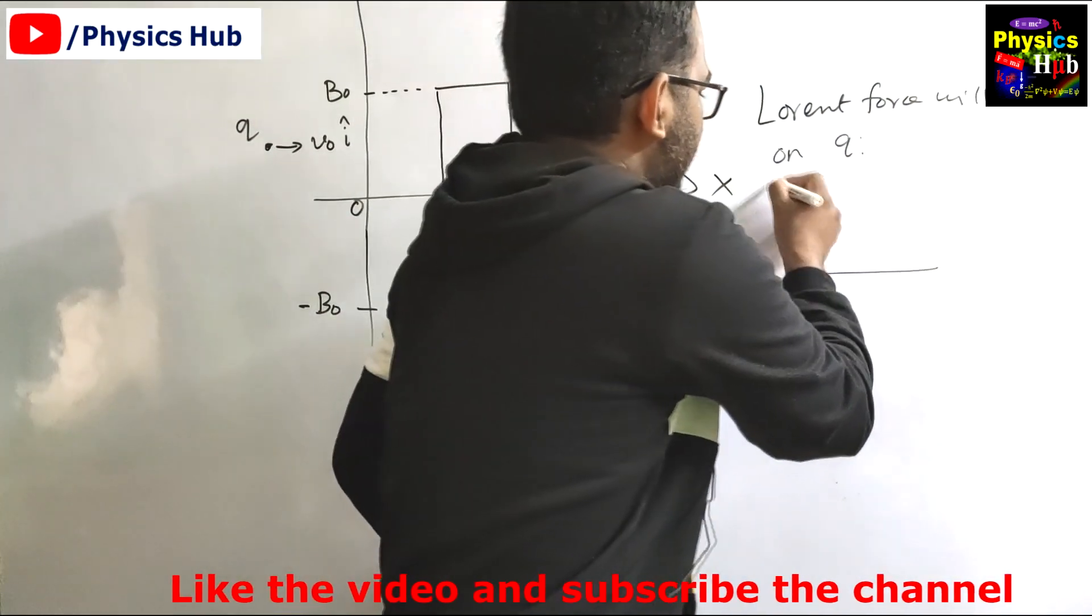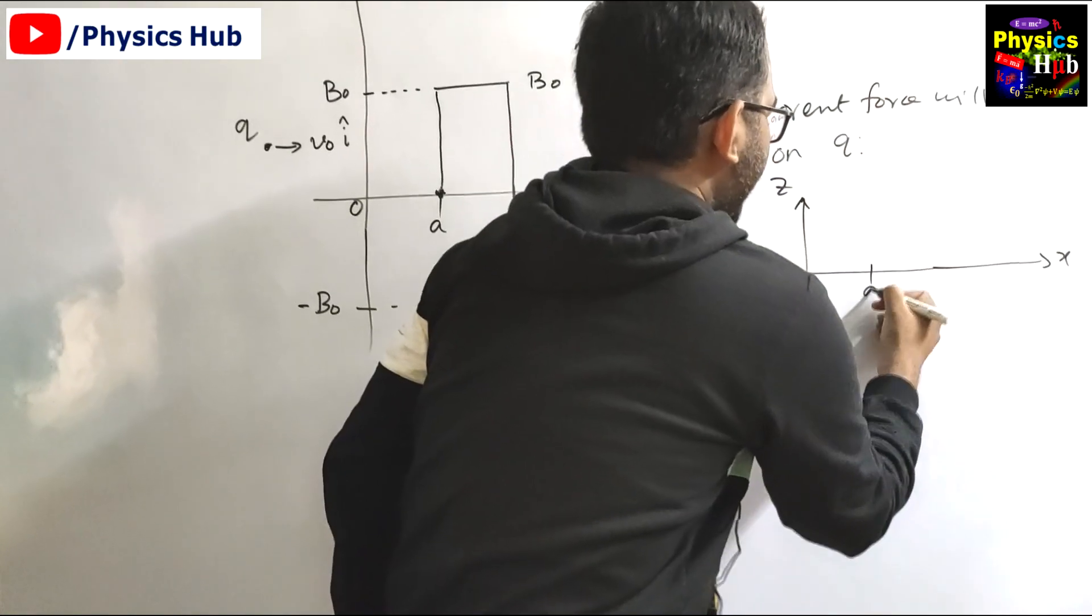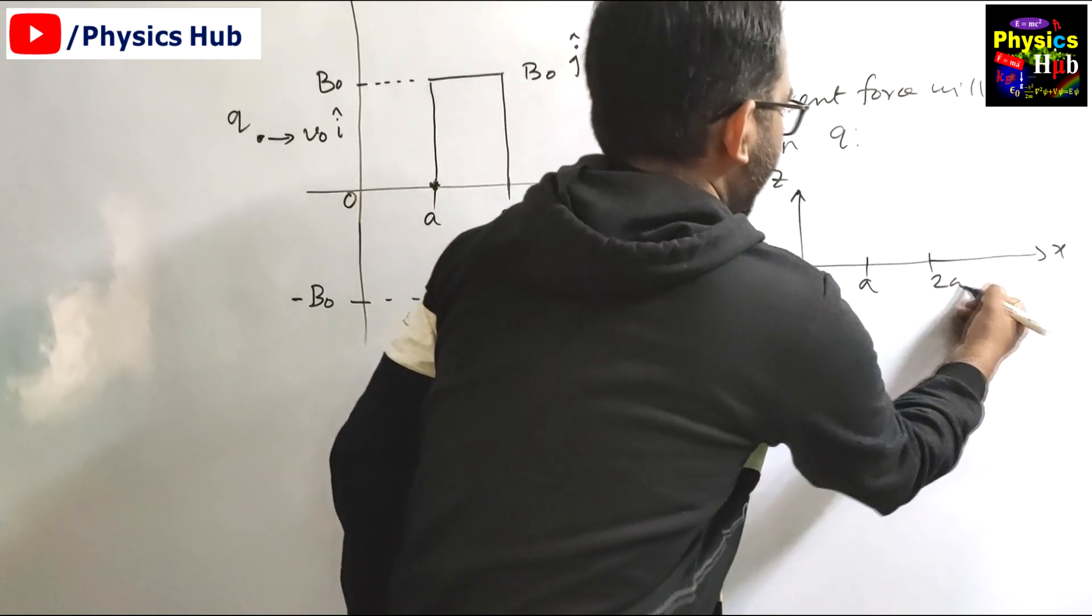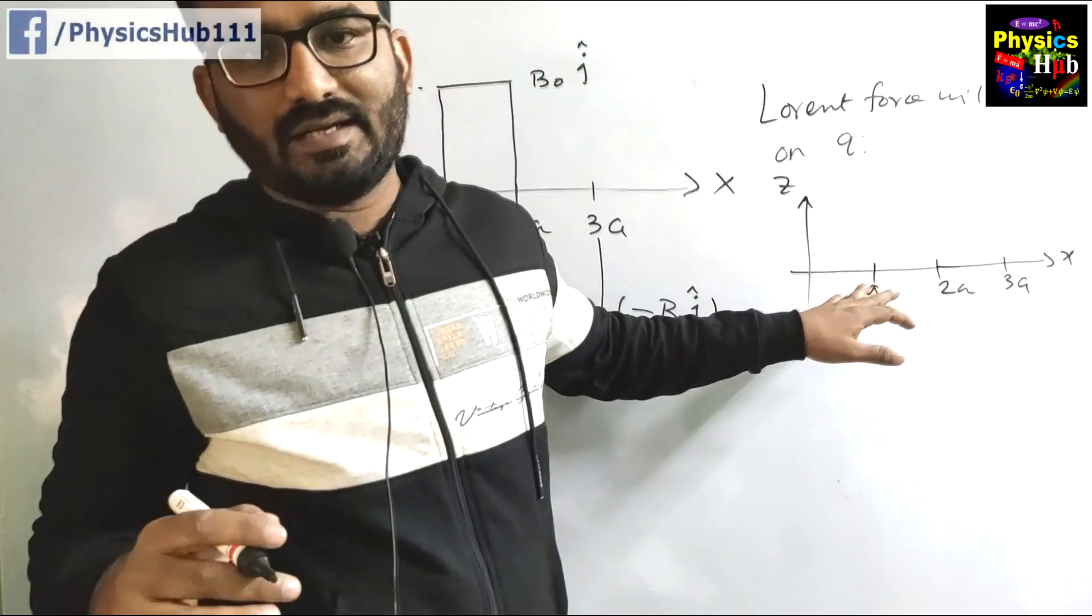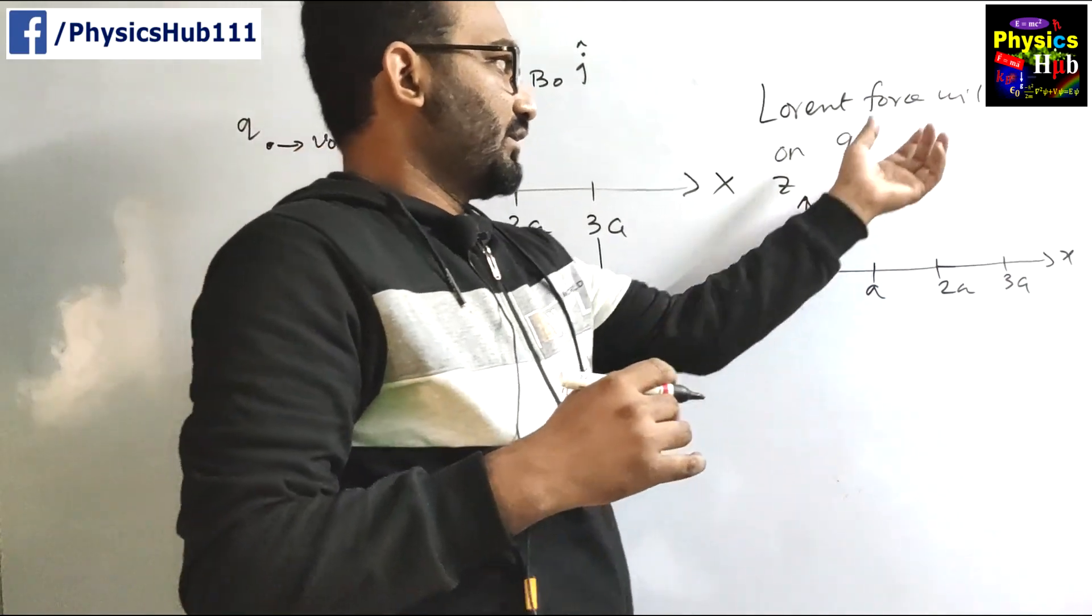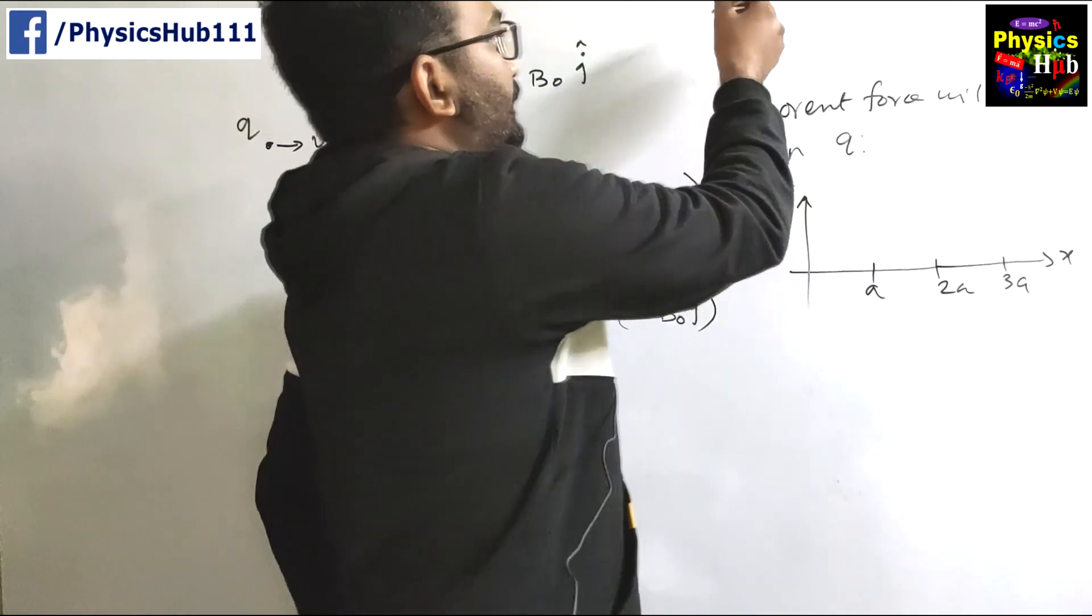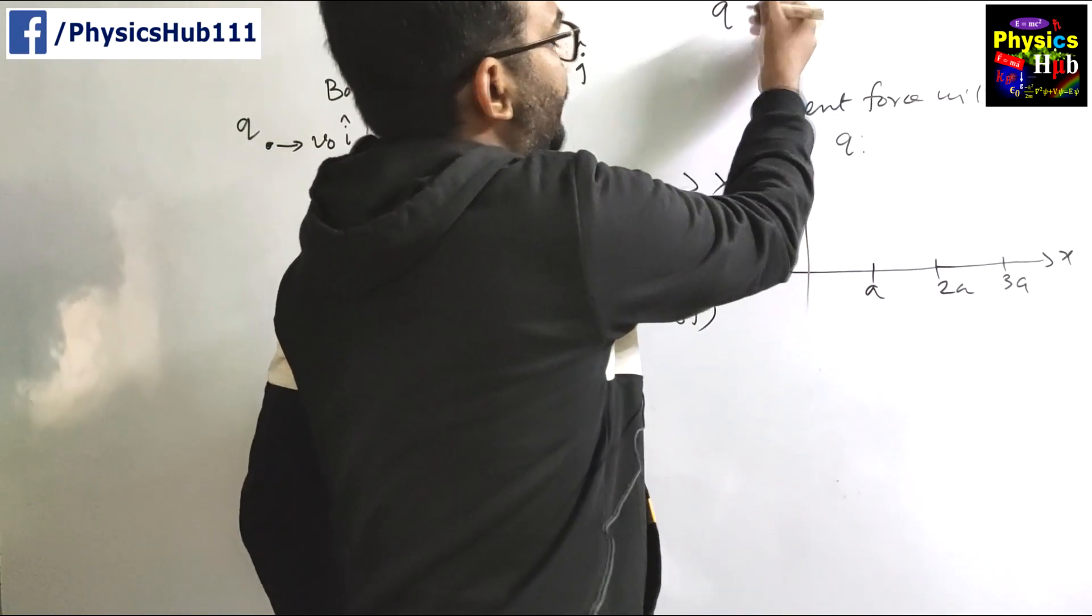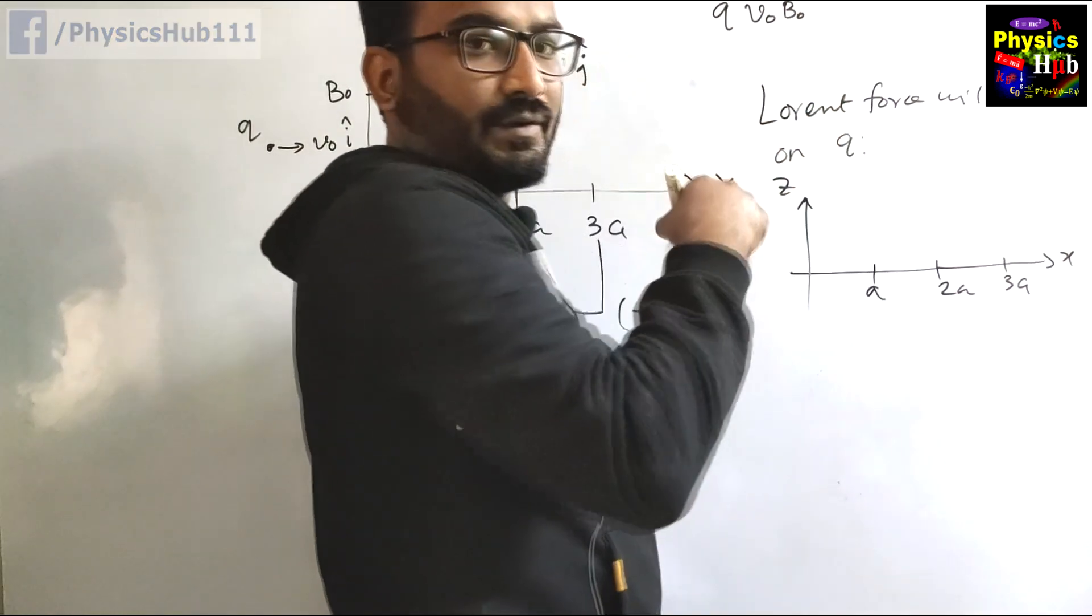Let us say this is your z axis, this is your x axis. This is a, then this is 2a, this is 3a. The particle has entered into the magnetic field region here so the Lorentz force will act, it will make a circular trajectory. This Lorentz force will be q into v cross B, so v naught B naught.